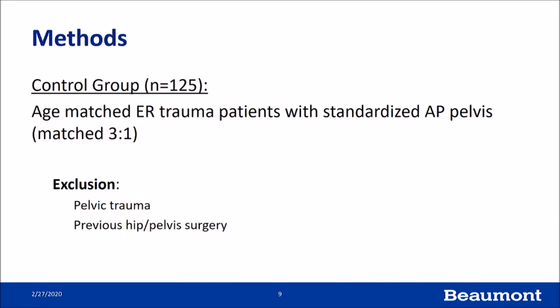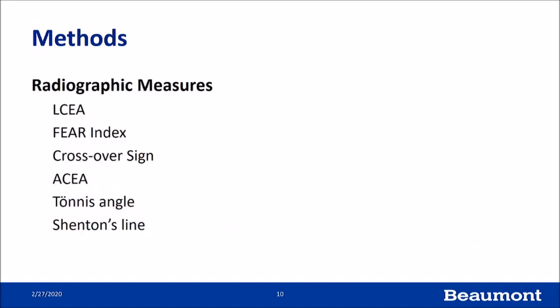Our control group was obtained from ER patients using a protocol for standardized AP pelvis x-rays, matched three-to-one. We excluded pelvic trauma or prior hip surgery. Radiographic measures assessed included lateral center edge angle, the calculated FEAR index, presence of a crossover sign, anterior center edge angle, tonus angle, and Shenton's line.